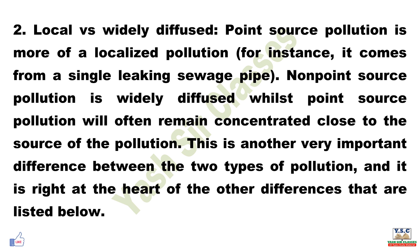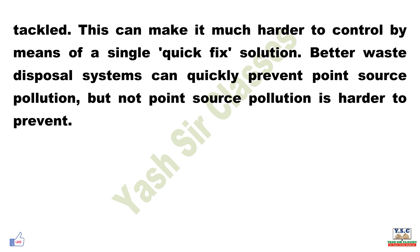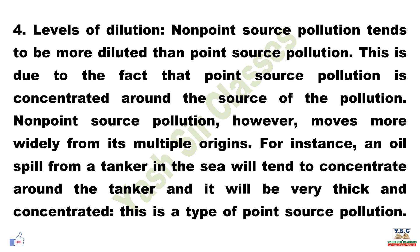Difference #3 — Ease of preventing and controlling the pollution. It is often argued that point source pollution is easier to control than non-point source pollution. This is because point source pollution can be traced back to a single point, which means the pollution can be stopped at its source. For example, if a pipe is leaking chemicals into a river, the pipe can be located and the leak stopped. With non-point source pollution, however, there is no single source that can be directly addressed, making it much harder to control with a single quick-fix solution.